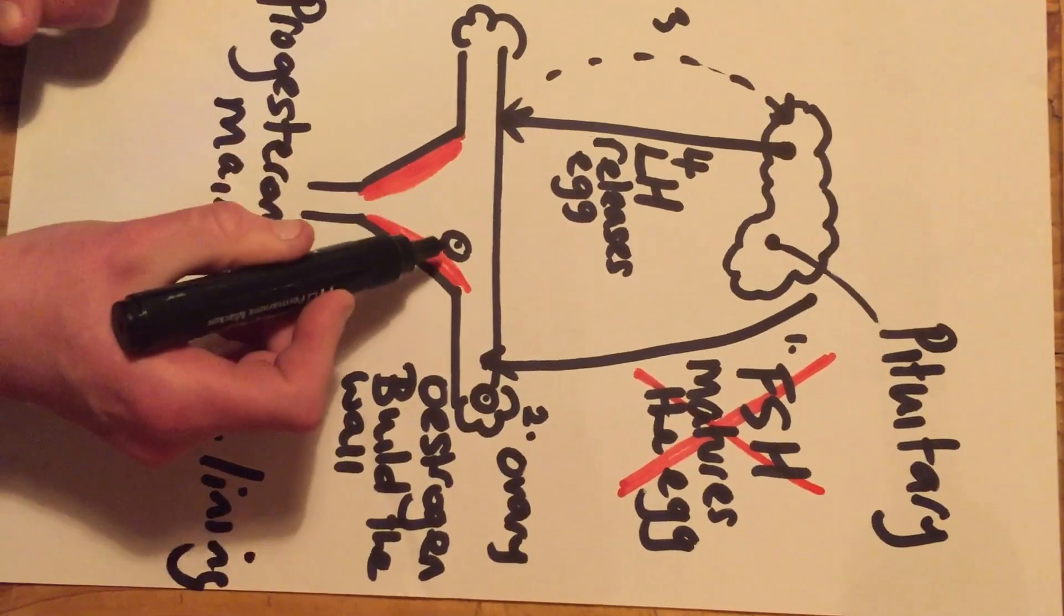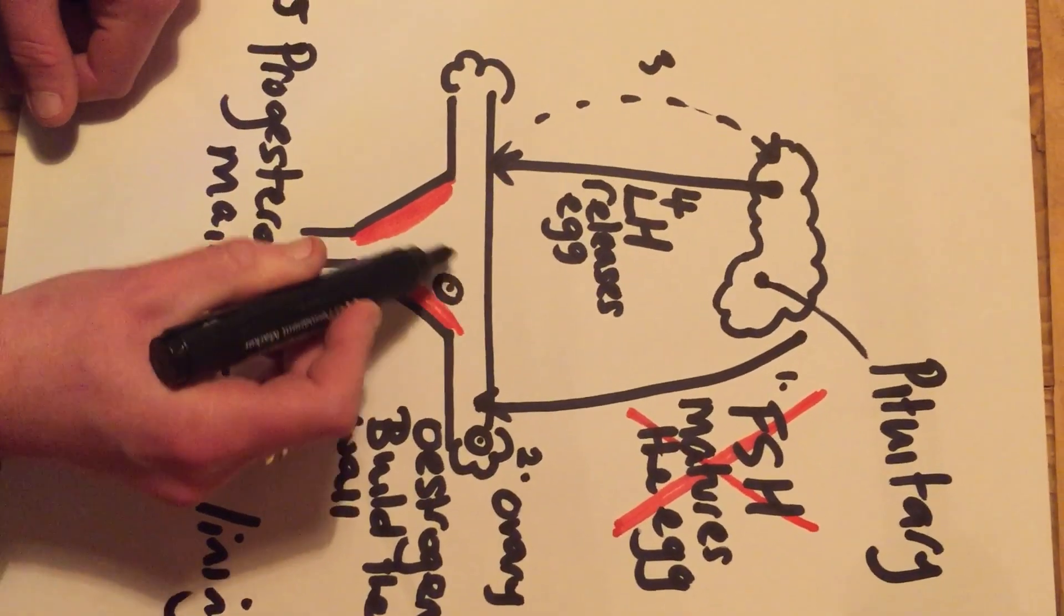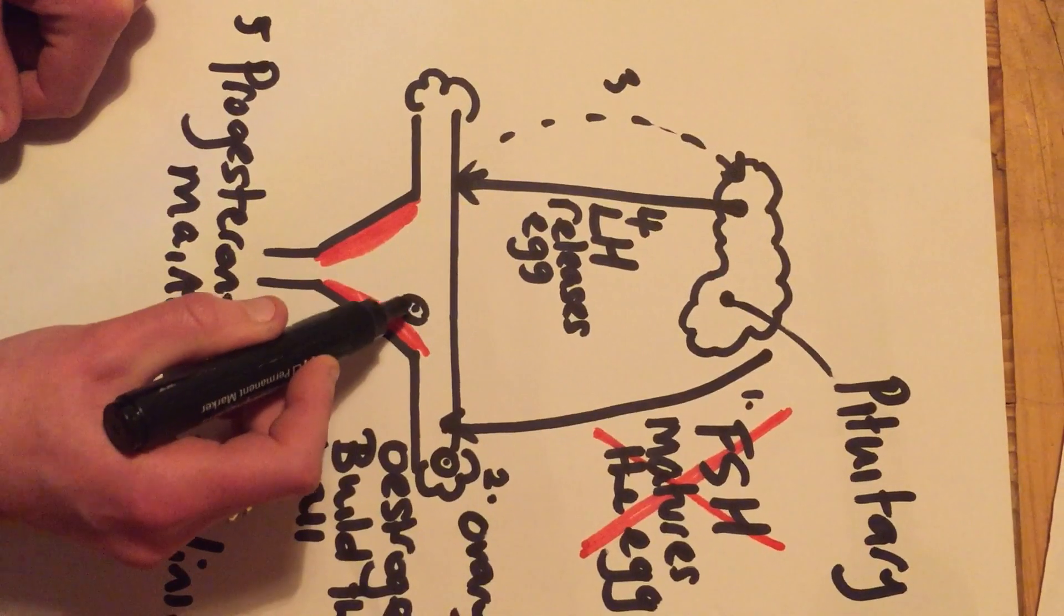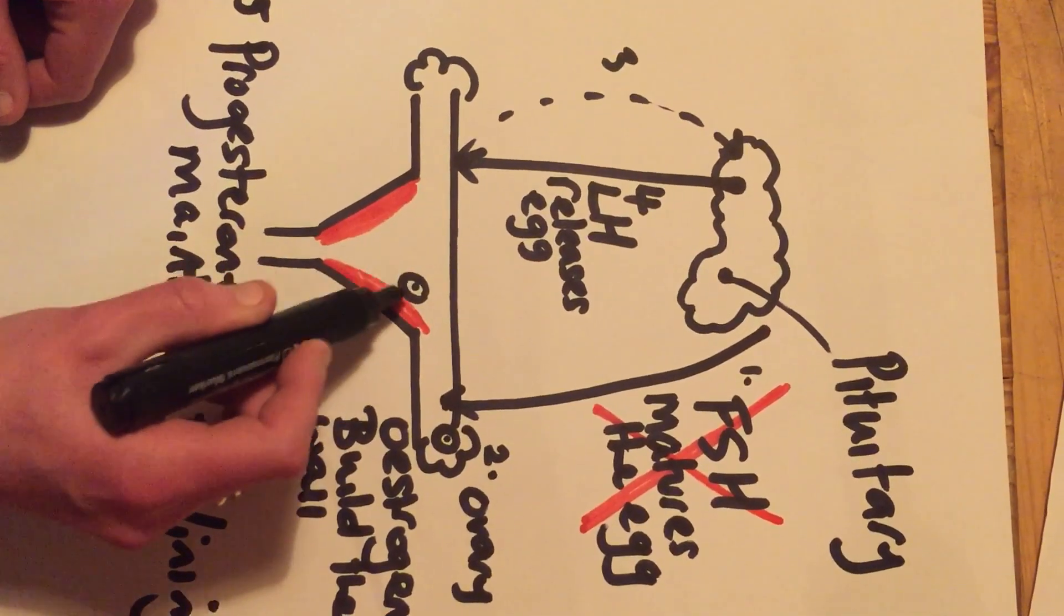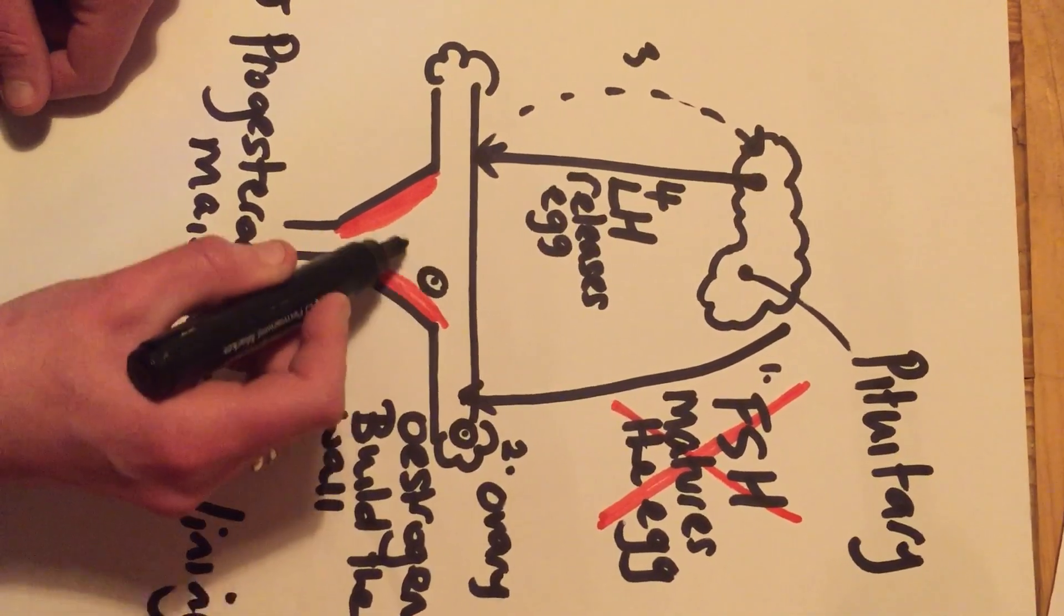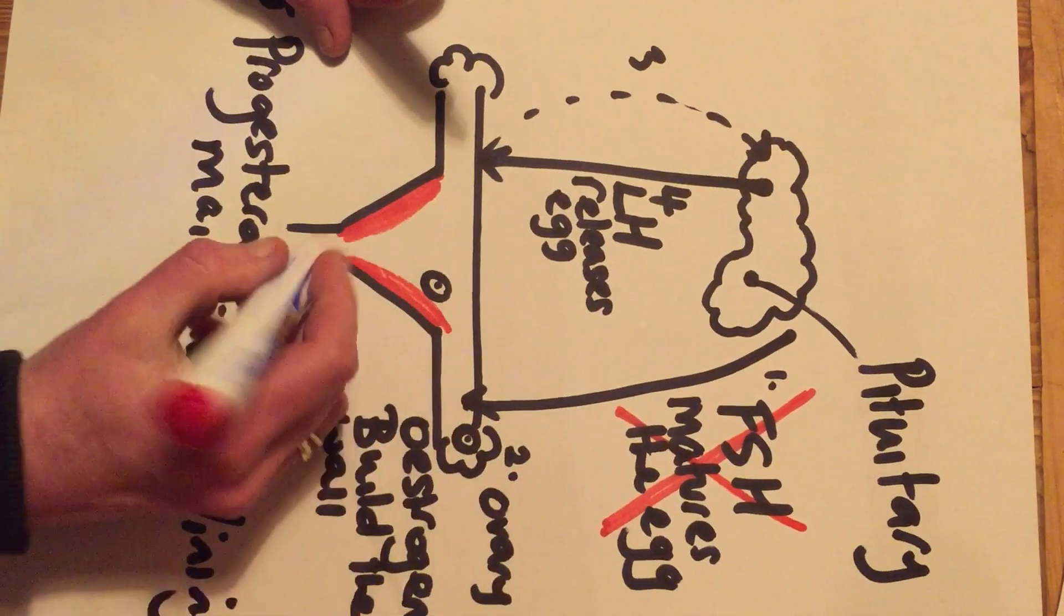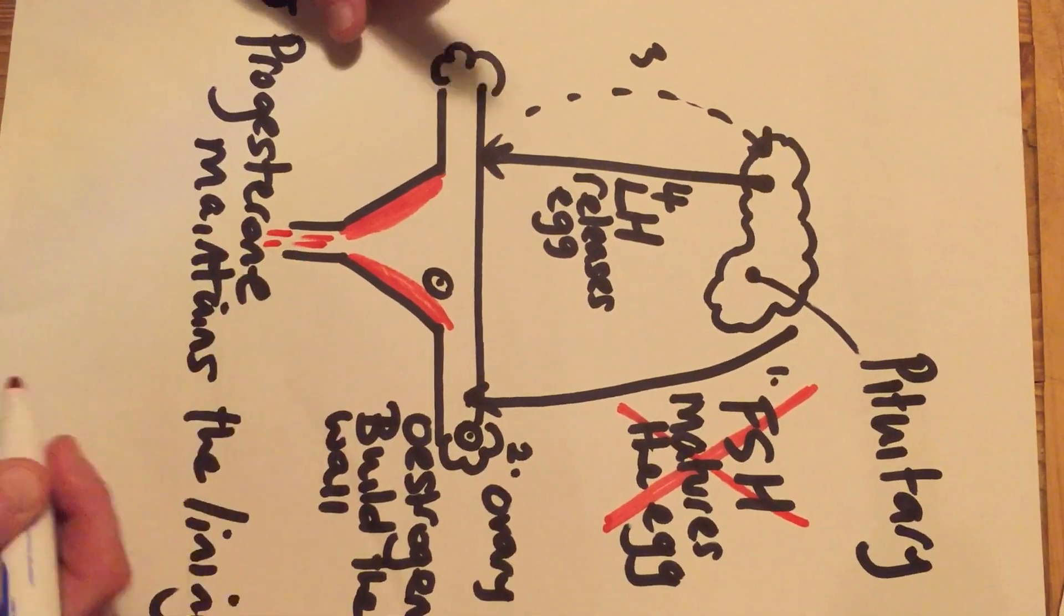Keeps that nice and thick so that if a sperm is to arrive, it can be fertilised and it can develop into a foetus. If a sperm doesn't arrive, then the lining will shed and a girl will have a period.